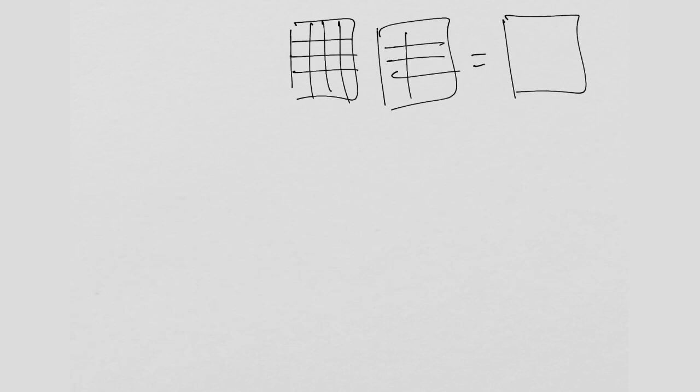So matrix multiply, right? We have already seen how to do matrix multiply. This is my matrix A, this is my matrix B, I multiply them I get C. I know how to do my blocked algorithm, right? So by now you are all familiar with this, right?